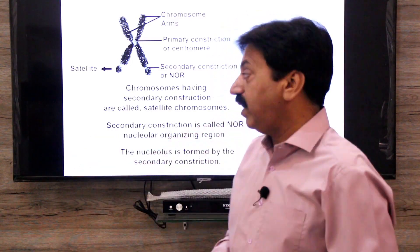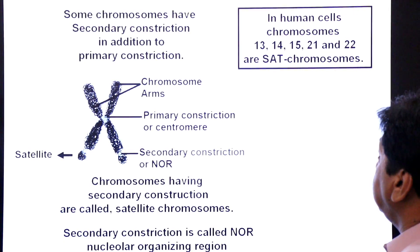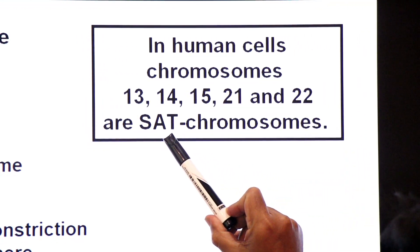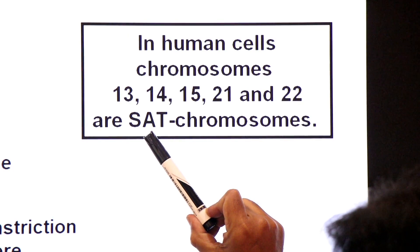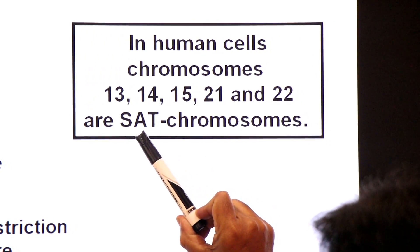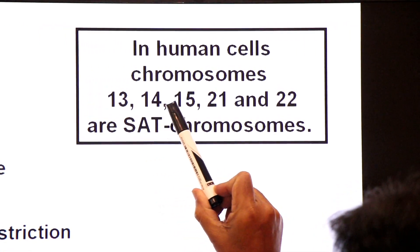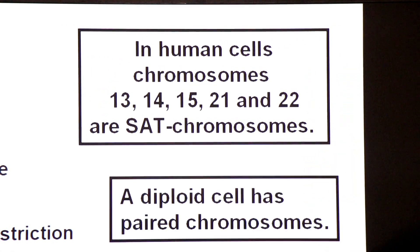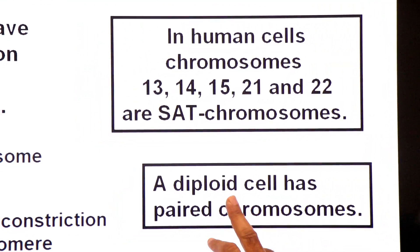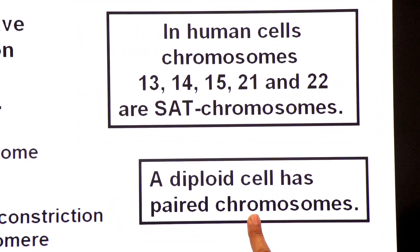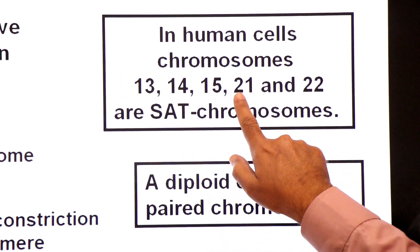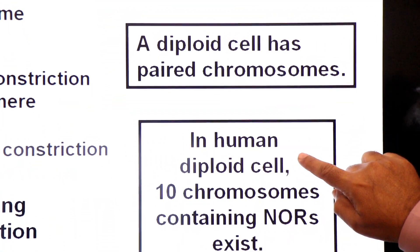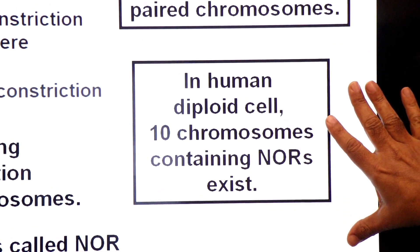In human cells, chromosomes number 13, 14, 15, 21, and 22 are satellite chromosomes — meaning they have secondary constrictions which are the NOR regions. In a human diploid cell, there are 10 chromosomes containing NOR, meaning there are 10 satellite chromosomes.